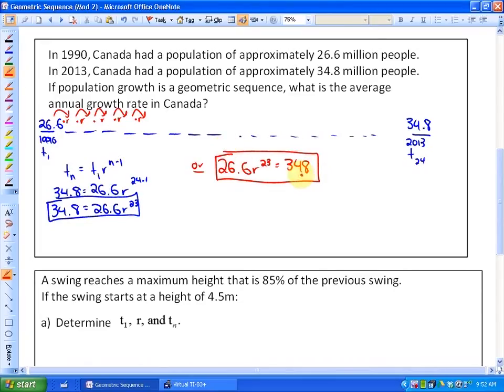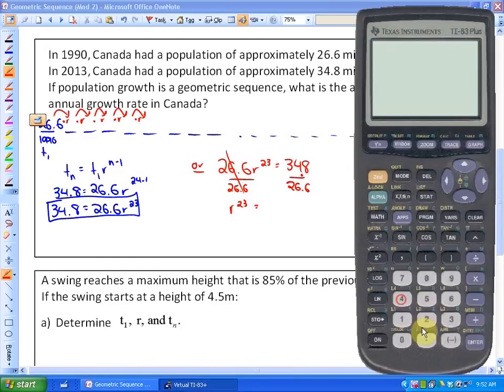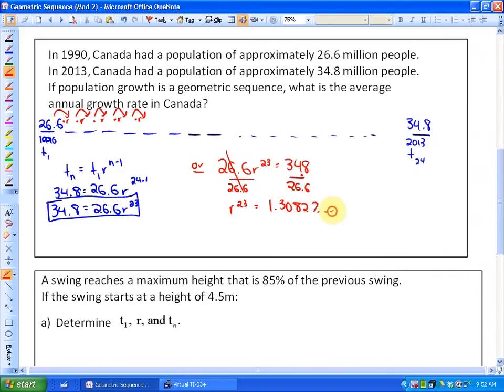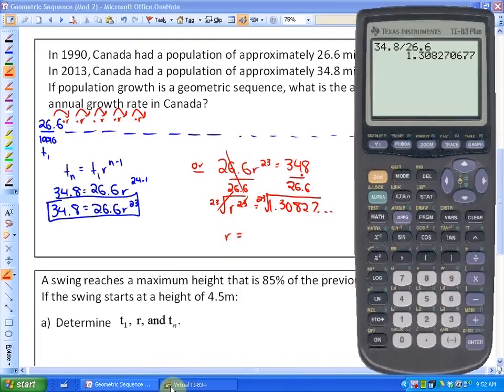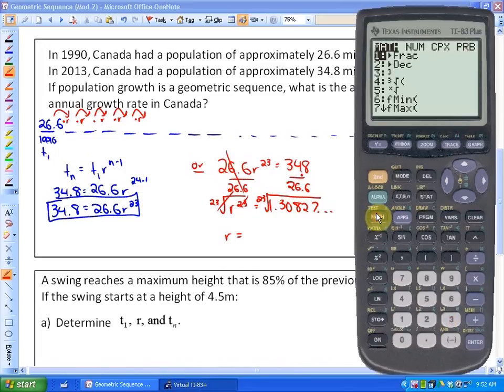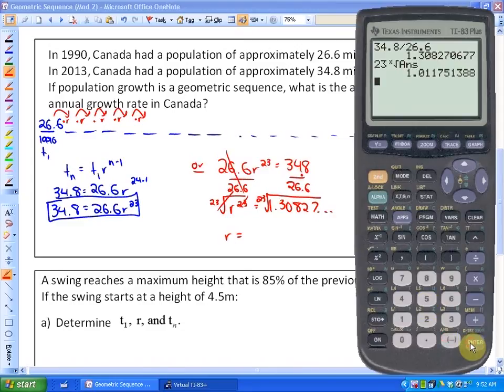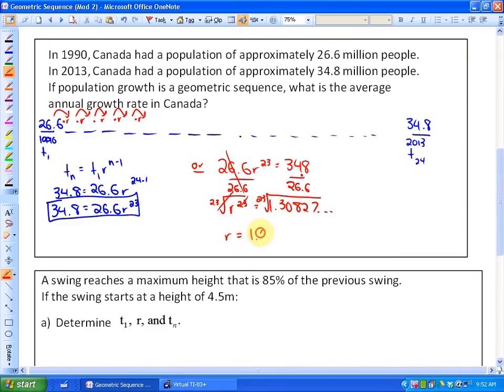The rest of this is just solving for the ratio. So I'll divide by the coefficient, which is 26.6. So we have r to the power of 23 is equivalent to 34.8 divided by 26.6, which is 1.30827. In order to come up with the ratio, we need the opposite of the exponent 23, which is the 23rd root. So if we take the 23rd root of 1.30827, we get 1.01175. That is our answer, or the growth rate per year.